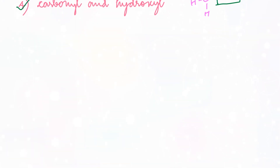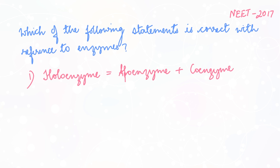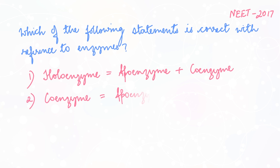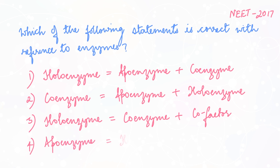This question is from NEET 2017: which of the following statements is correct with reference to enzymes? Options are: holoenzyme = apoenzyme + coenzyme; coenzyme = apoenzyme + holoenzyme; holoenzyme = coenzyme + cofactor; apoenzyme = holoenzyme + coenzyme. I've covered this topic in detail in my video on enzymes — check that out for a complete understanding. I'll go into it briefly so we can get to the answer.